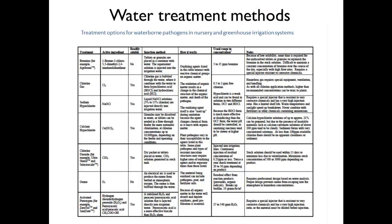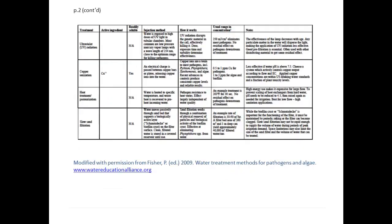This table shows several different methods for disinfesting water, with the type of treatment, details about how it is applied, and usual concentration. This document is available in the grower manual and at the Water Education Alliance for Horticulture website. It describes several oxidants such as bromine, chlorine gas, sodium hypochlorite, calcium hypochlorite, chlorine dioxide, ozone, and activated peroxygen. Other water treatment methods include UV radiation, copper ionization, heat treatment, and slow sand filtration.